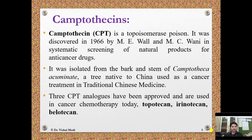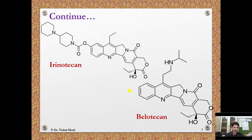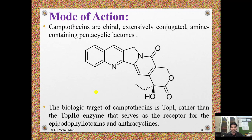Three camptothecin analogues have been approved and are used in cancer chemotherapy today: topotecan, irinotecan, and belotecan. Drugs belonging to the camptothecin class are camptothecin, topotecan, irinotecan, and belotecan.